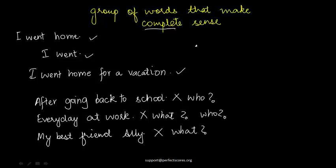So you see, the number of words has nothing to do with complete versus incomplete sense. A sentence can actually be just two words, for example 'I went.' It can have ten words or even twenty words. The number of words has nothing to do with it — it's only the amount of sense that a sentence makes.